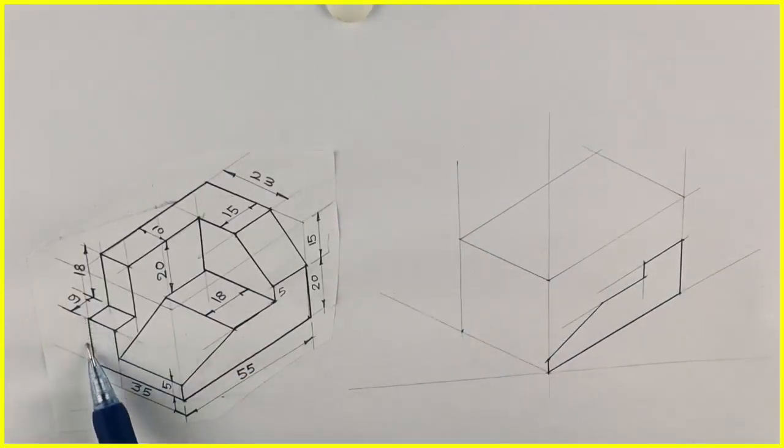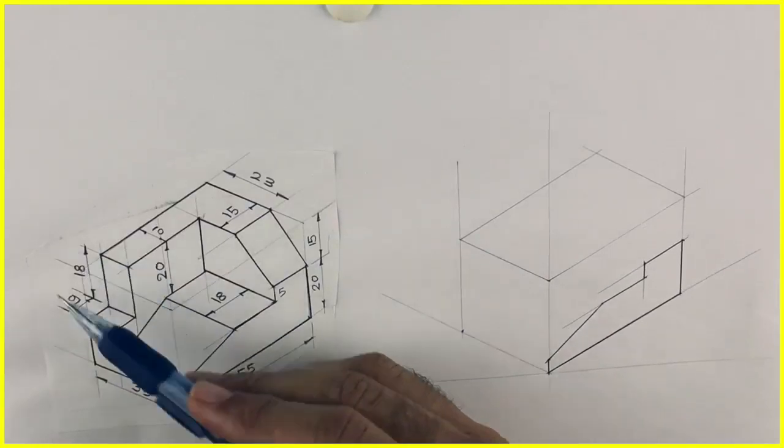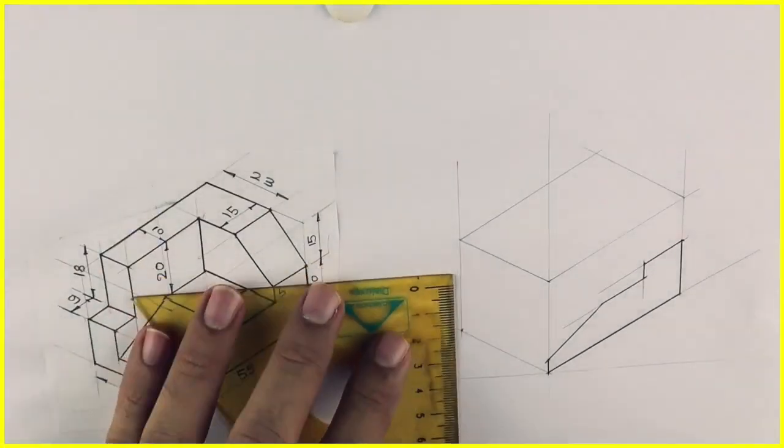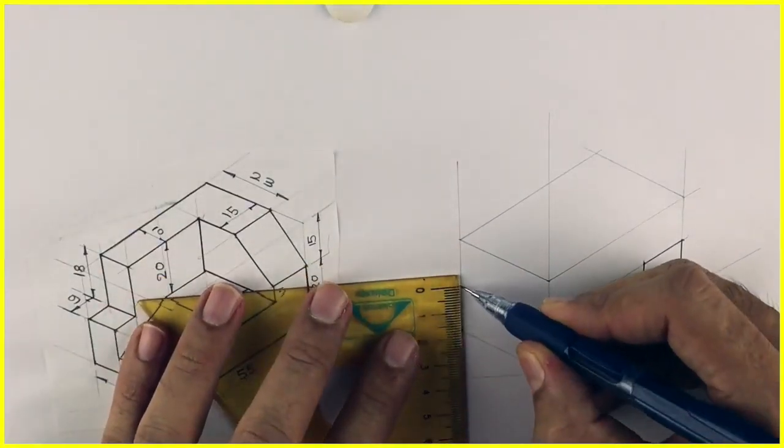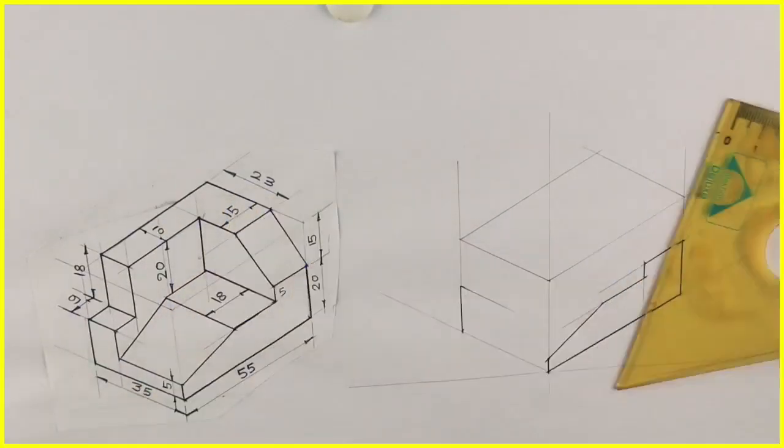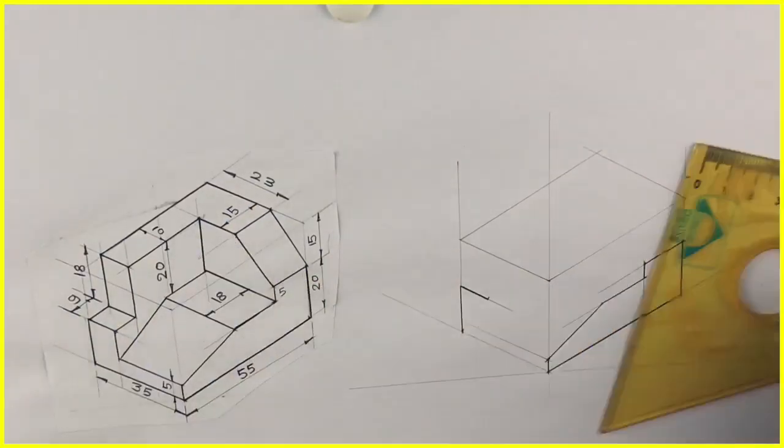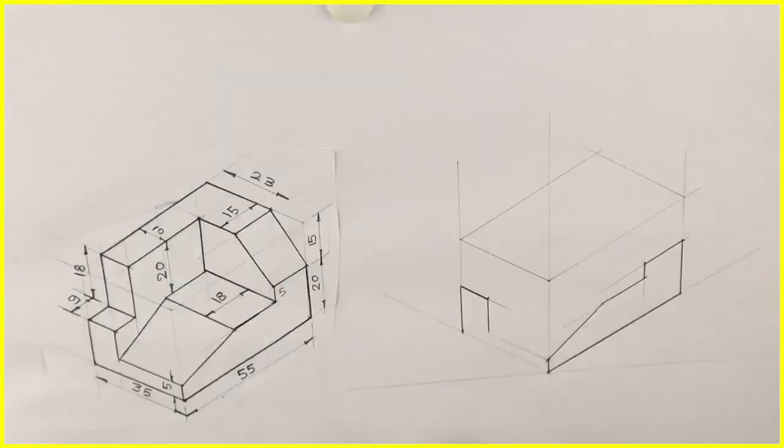After that, on the left-hand side, we can see the part which is nearer to us. First, we'll draw the surface which we can see. This height is 17 because 35 minus 18 is 17. Again, take 10 and go down. We don't know how much to go down, so we can extend like this.